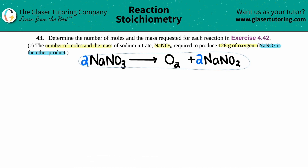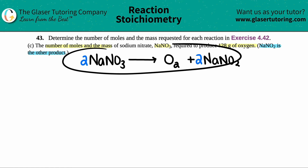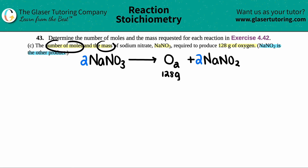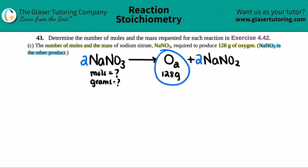Now that we have the balanced equation, I like to write down what we're starting with. They gave me information about oxygen, so I'll find O2 in the balanced equation and write underneath it that I have 128 grams. Then I write down what the question is asking for: the number of moles and the mass of NaNO3. So I need two answers.